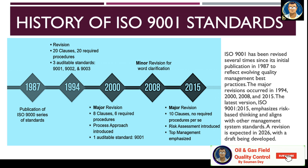ISO 9000 has been revised several times since its initial publication in 1987 to reflect evolving quality management best practices. The major revisions were in 1994, 2000, 2008 and 2015. The 2015 edition emphasizes risk-based thinking and aligns with other management systems and standards. A new revision is expected in 2026, with a draft being developed.